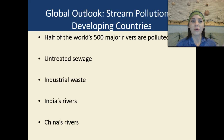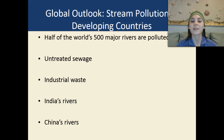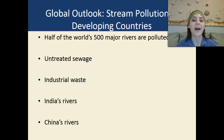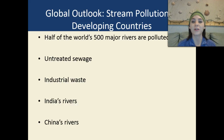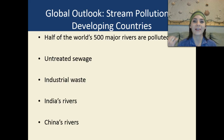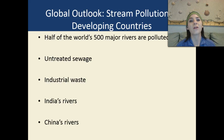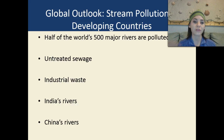Looking at the global outlook for stream pollution in developing countries — such as China, India, and nations that aren't quite where the United States is — unfortunately over half of the world's 500 major rivers are polluted. They're polluted with untreated sewage, with feces and pollutants going directly into the water without any type of treatment. Industrial waste from factories and plants is also going directly into rivers and streams.